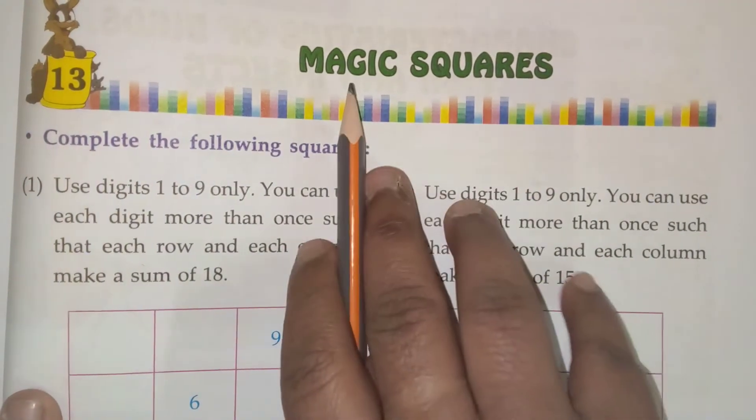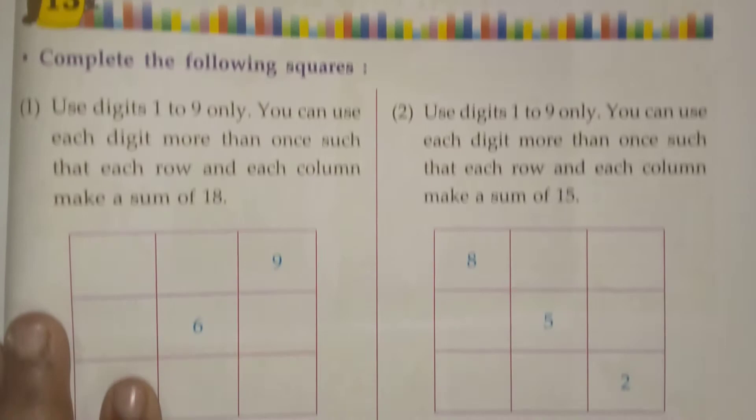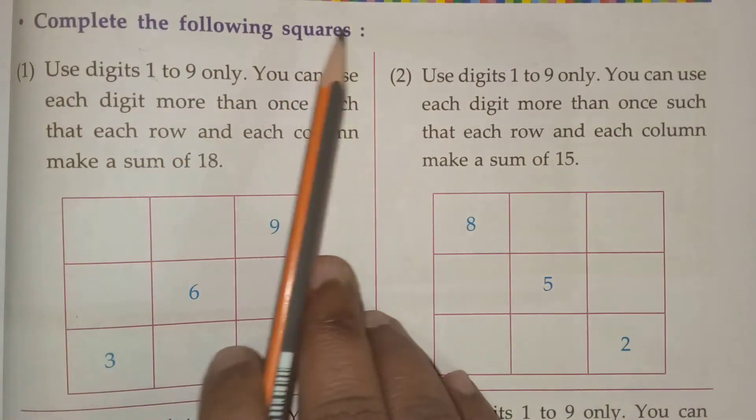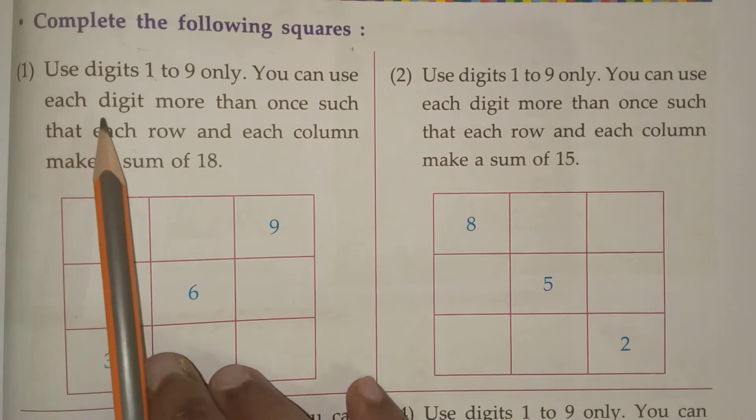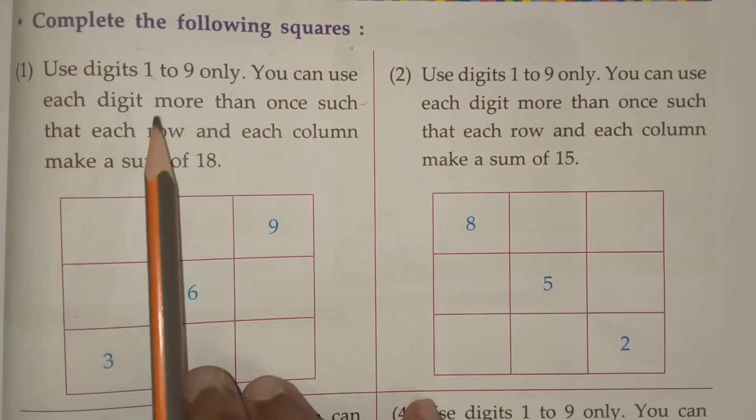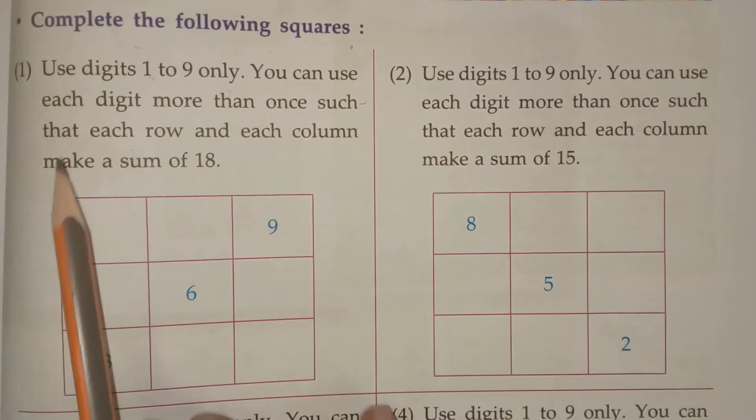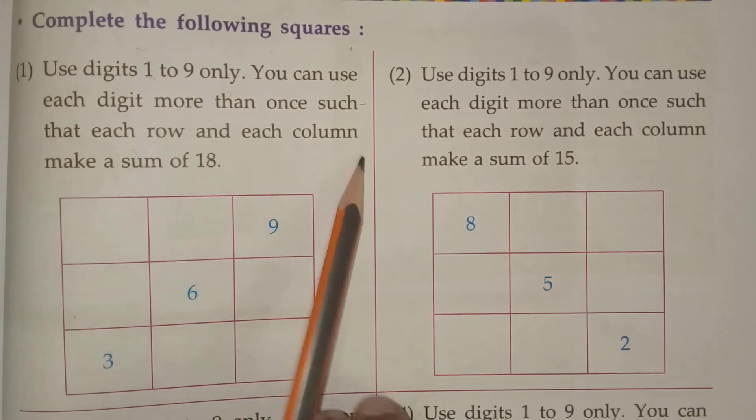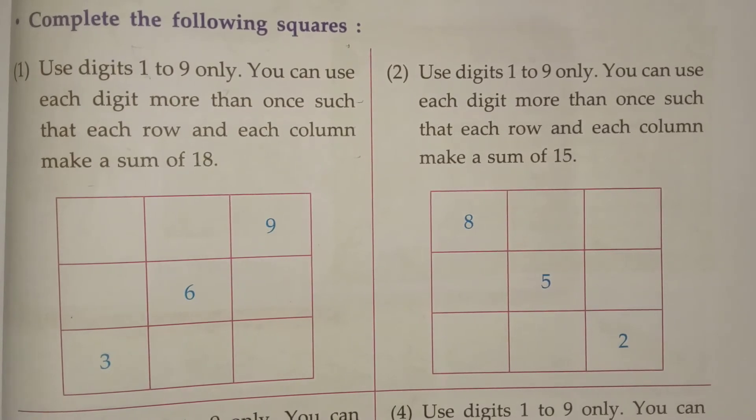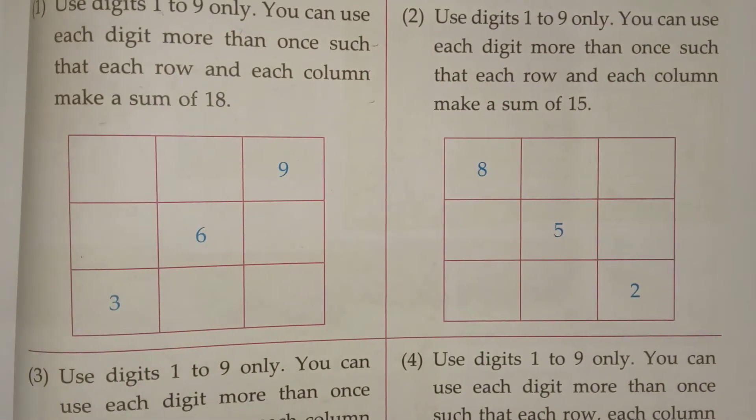What we are going to learn children about the magic square. See, complete the following squares. Use digit 1 to 9 only. You can use each digit more than once such that each row and each column make a sum of 18. What we should do children? Here we should make a row and column that make a sum of 18. We should use here 1 to 9 only.